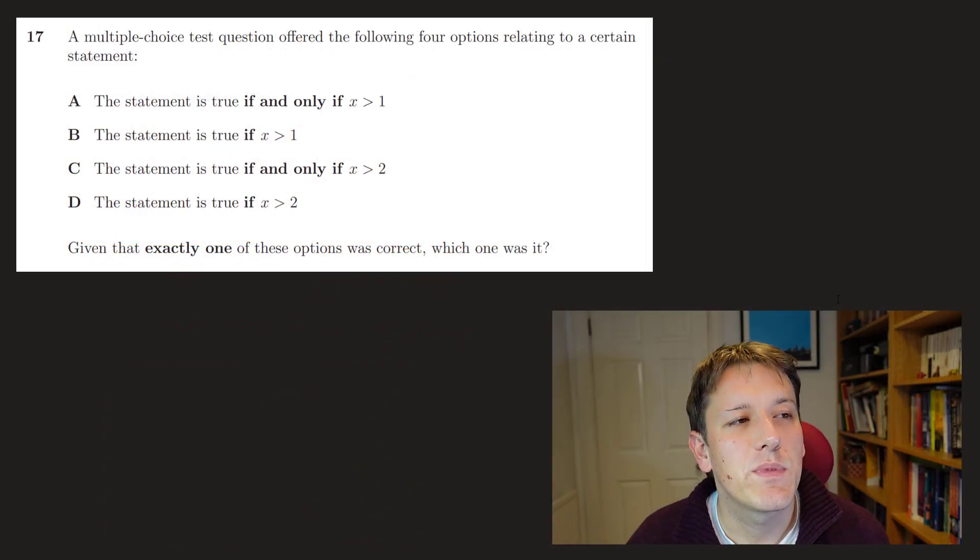So in question 17, we've got a multiple-choice test question offering four options relating to a certain statement. It's either true if and only if x is greater than 1, if x is greater than 1, if and only if x is greater than 2, and if x is greater than 2. It says, given exactly one of these options was correct, which one was it?